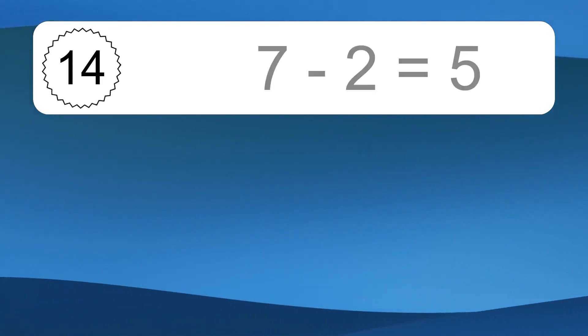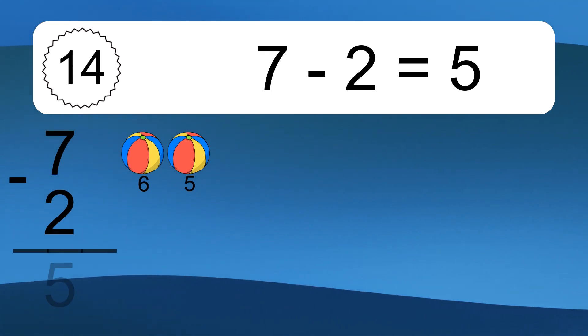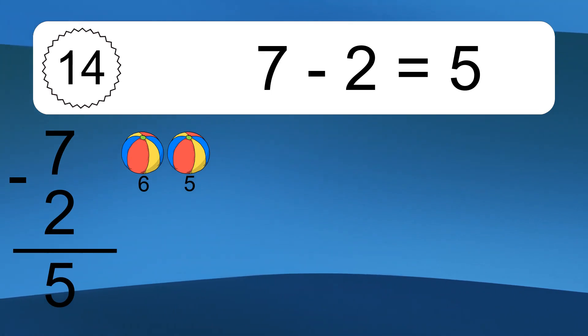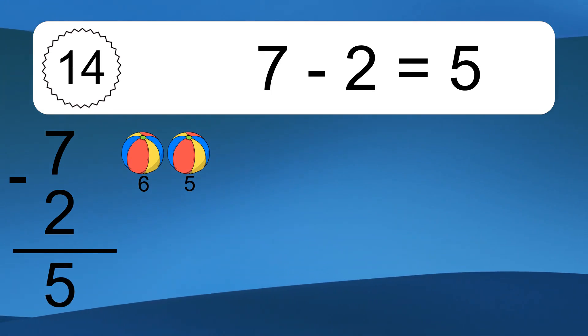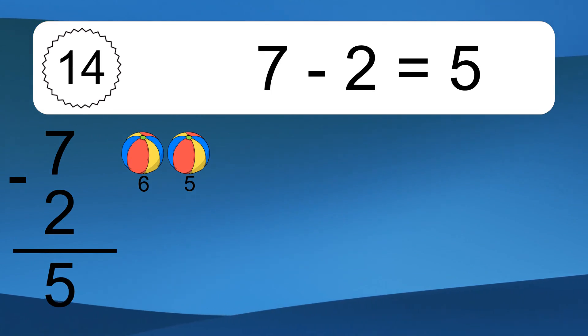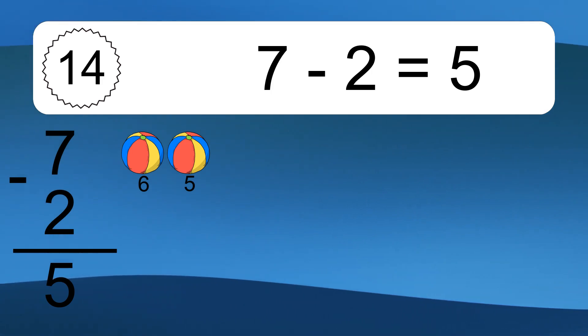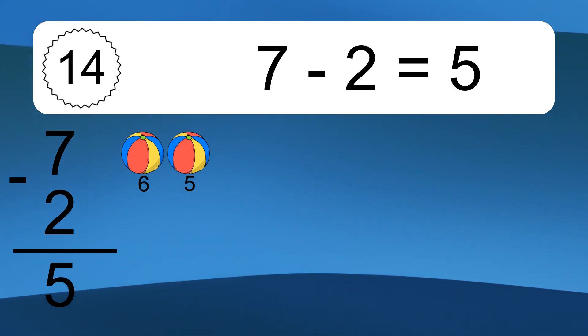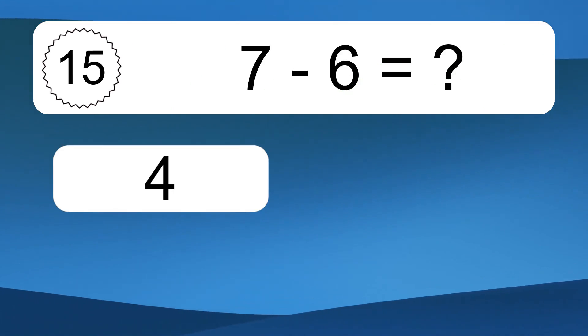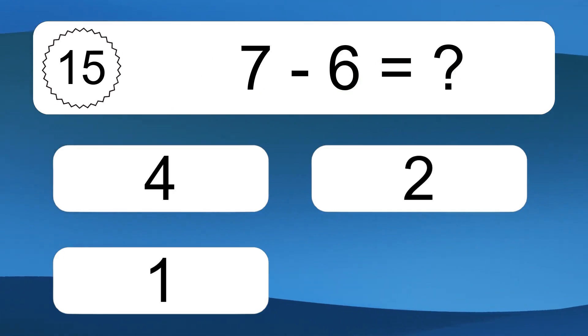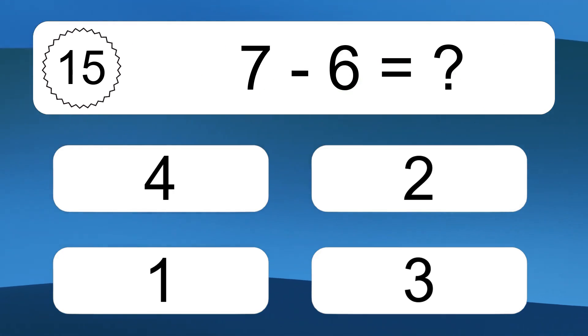7 minus 2 equals 5. Let's count it. 6, 5. 7 minus 6 equals what?